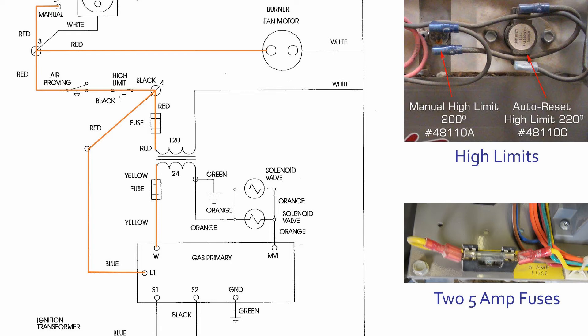At that point, electricity will then move through two 5 amp fuses and energize the primary gas control. The 5 amp fuses protect the primary gas control circuit board.